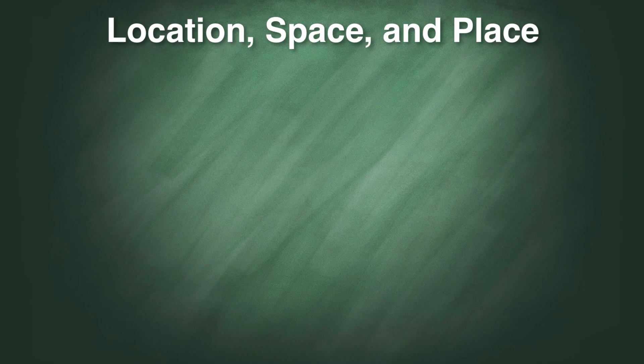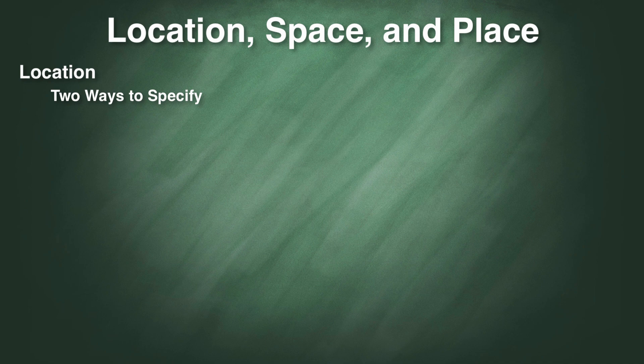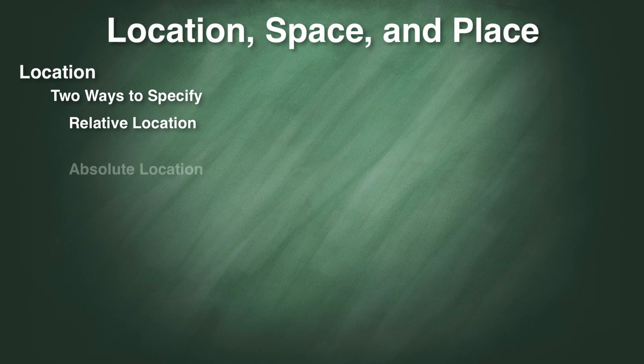So first let's talk about location. Location is, of course, very important in geography. We communicate where something is by specifying its location. There are basically two ways that we can do this. The first is by specifying the relative location, and the other is by specifying absolute location.